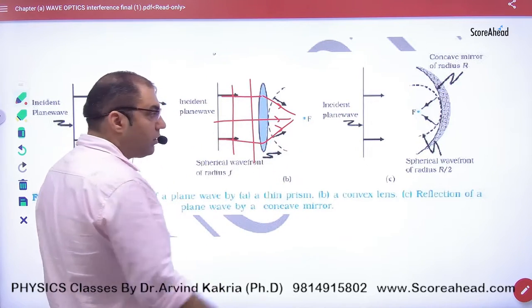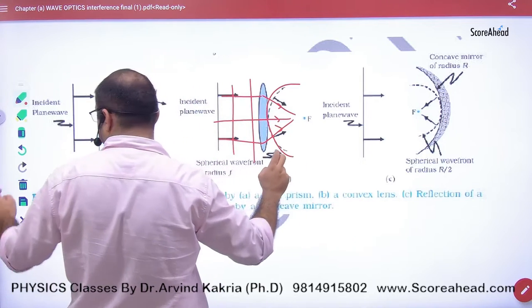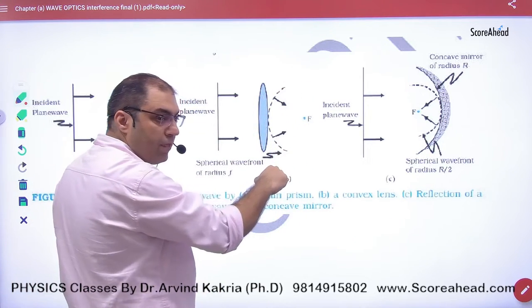This plane wavefront is initially plane, but the wavefront will become curved like this because the light is converging.